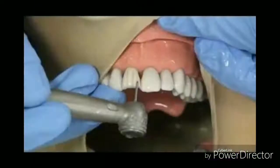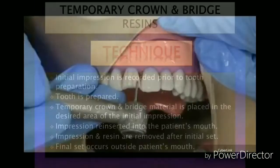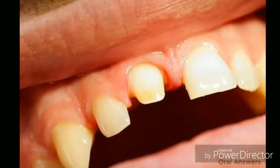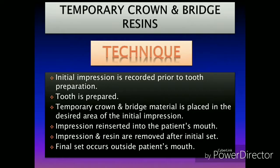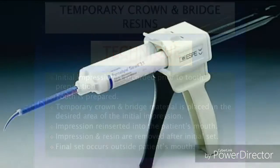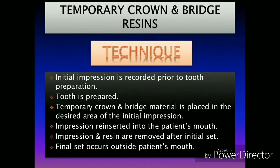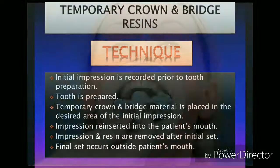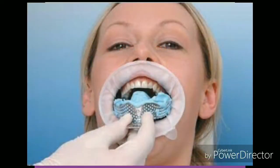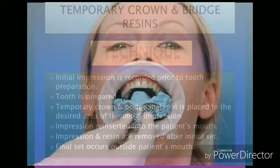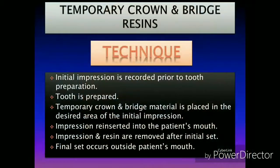After crown cutting, the mixed temporary crown and bridge resin is applied to the prepared area by placing it into the desired area of the alginate impression, which is then reinserted in the patient's mouth. The material then starts to set.